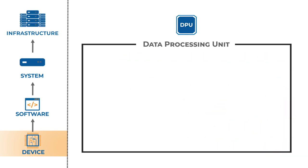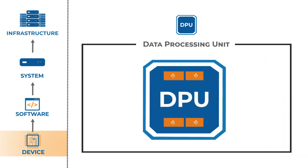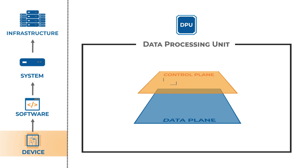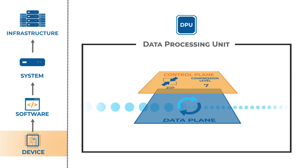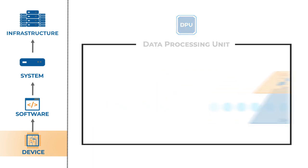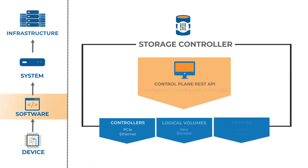The hardware accelerators integrated into the DPU also implement a clear data plane and control plane separation. For example, in a compression accelerator, the compression level and the compression algorithm are set up by the control plane, while the actual compression itself is done at the data plane. At the services level, in the storage stack, the NVMe protocol is implemented on the data plane and REST is implemented on the control plane.